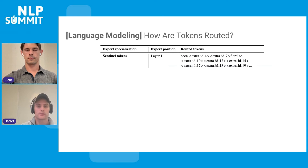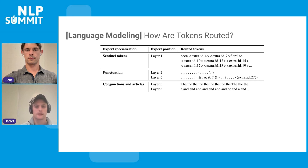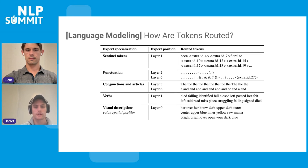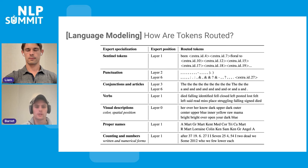We first study masked language modeling and how tokens are being routed. In masked language modeling with span corruption, there are masking tokens denoted by extra IDs, and we can see that these special tokens do get sent to certain experts — so there's specialization there. We can also see certain experts specializing on punctuation, conjunctions and articles. We also see some verbs and visual descriptions, as well as proper names, counting, and numbers. When you have learned routing algorithms, the model does seem to specialize, even if in somewhat shallower categories.